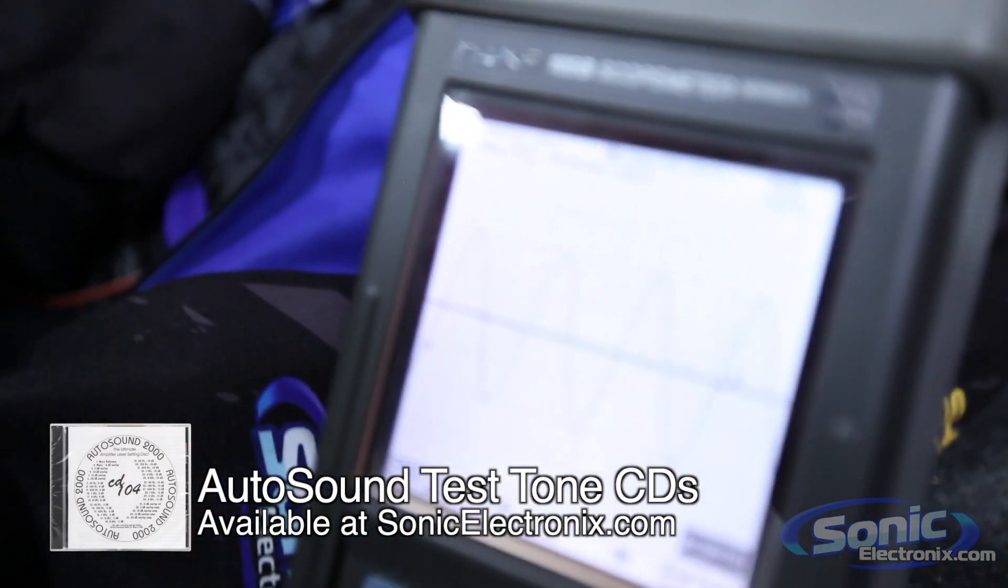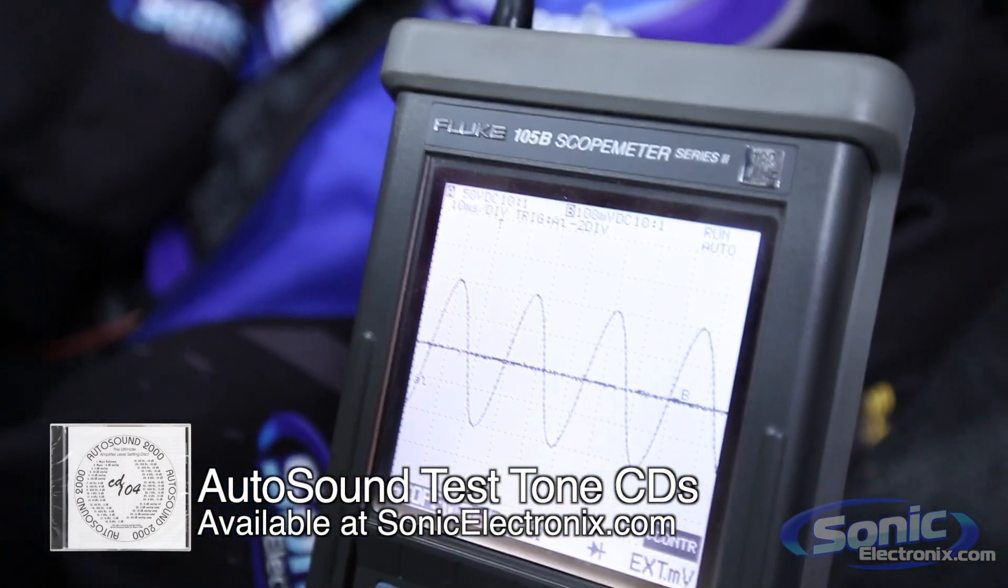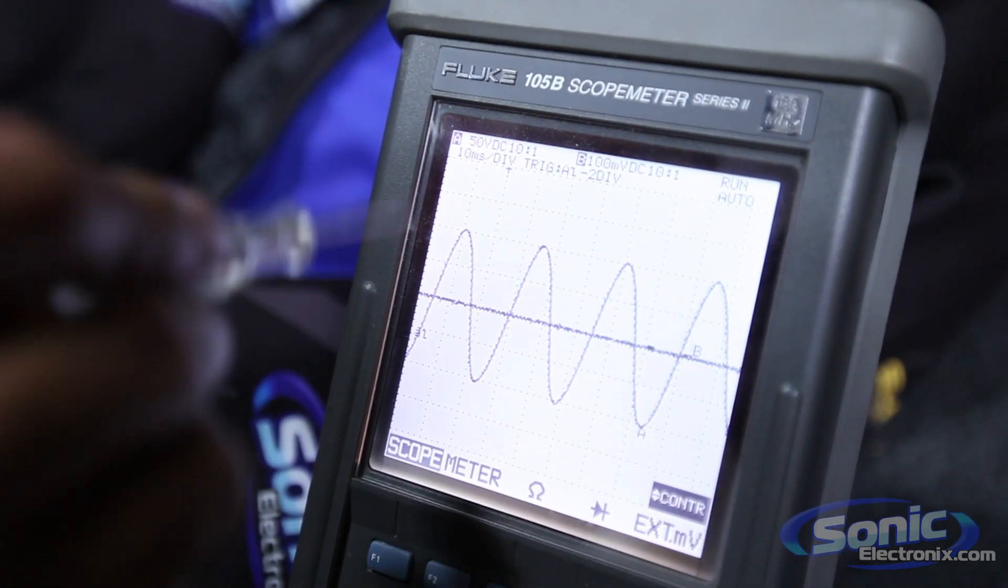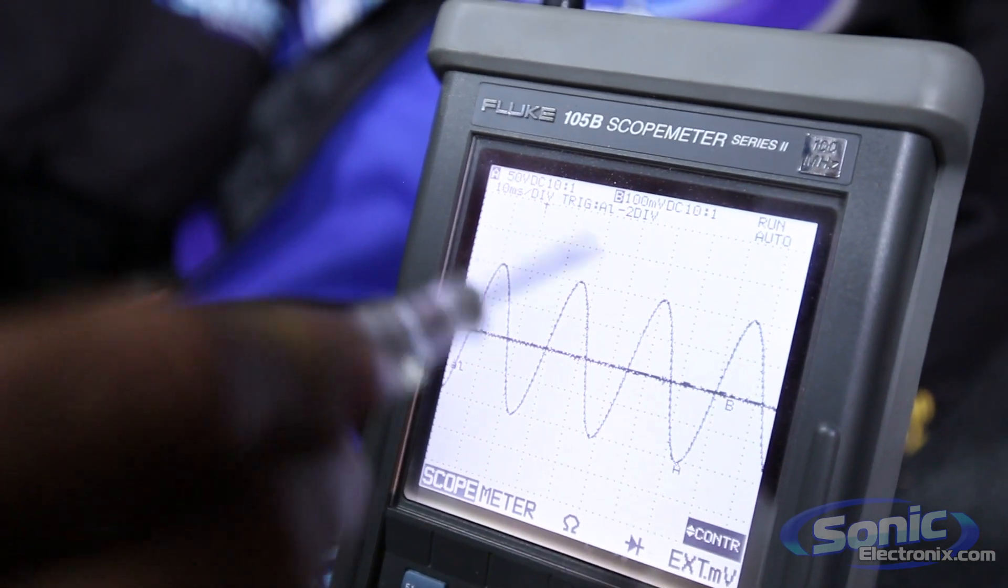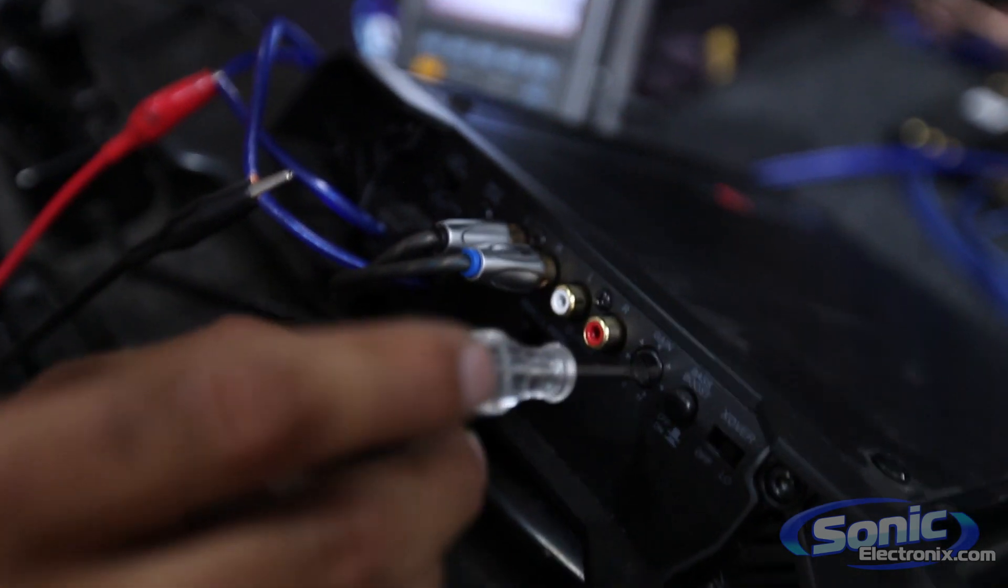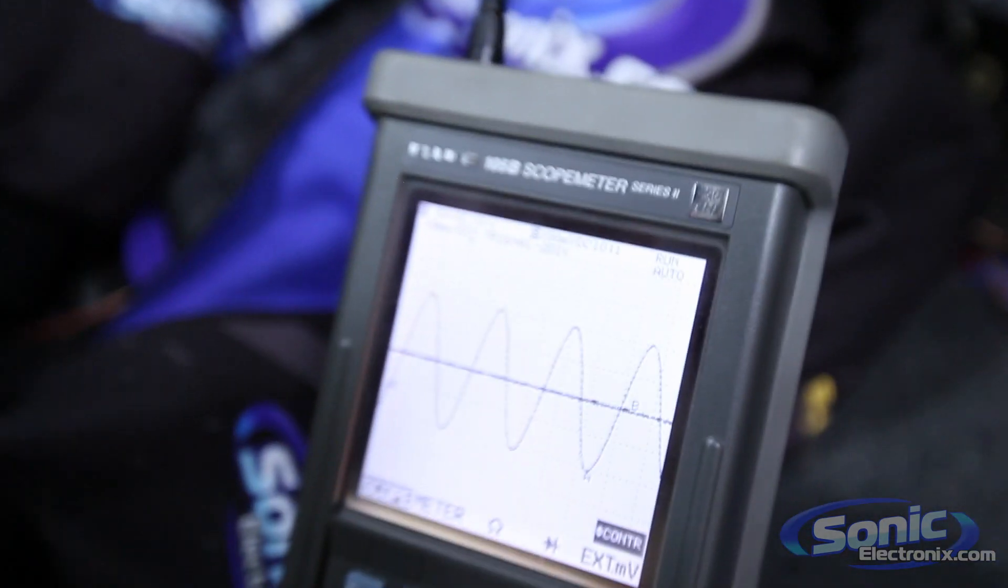So basically all I'm going to do is start creeping up this gain on this amplifier. As you can see, the gain is all the way down currently. The radio has already turned up three-quarters of the way. You see we have a nice smooth sine wave, and I'm going to go ahead and start turning up the gain on the amplifier so you can see what happens on the screen here.